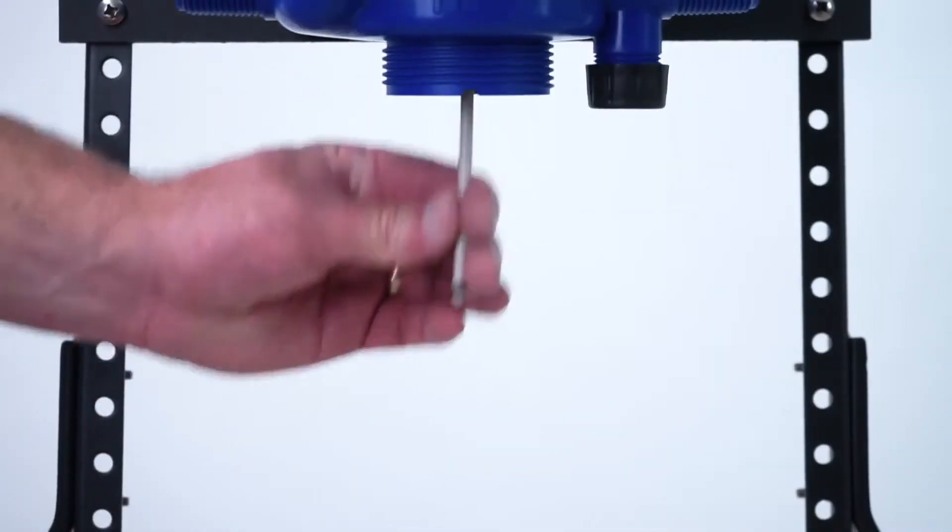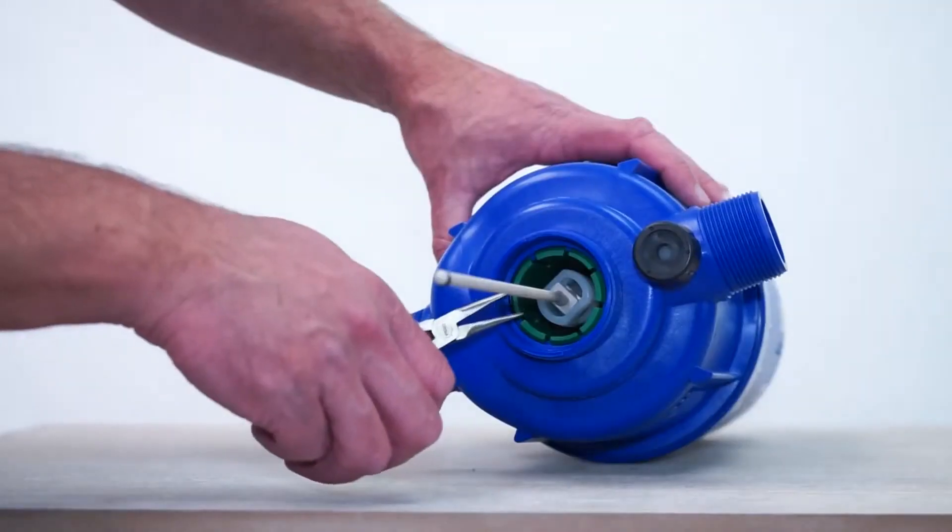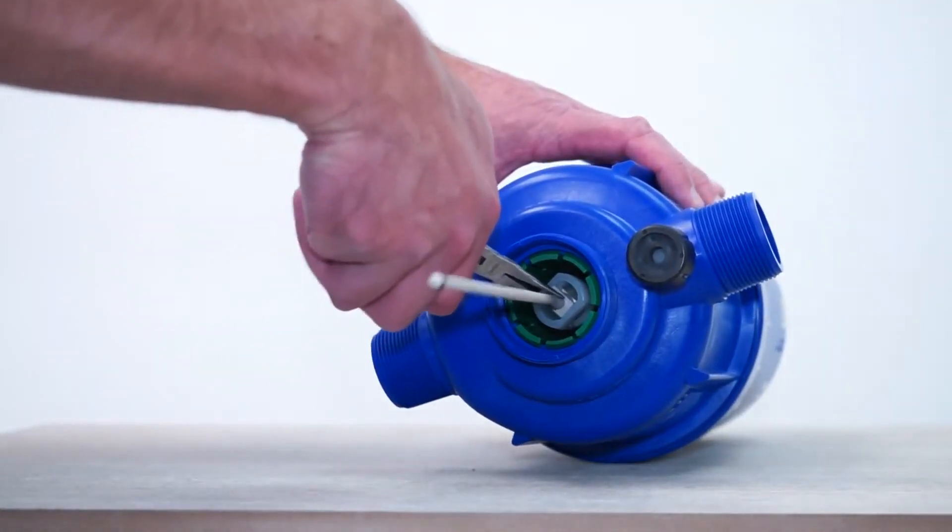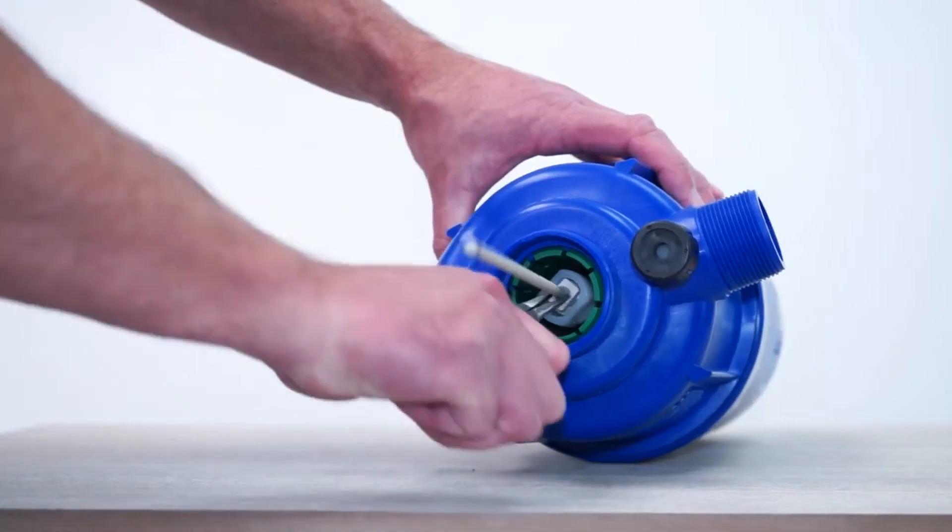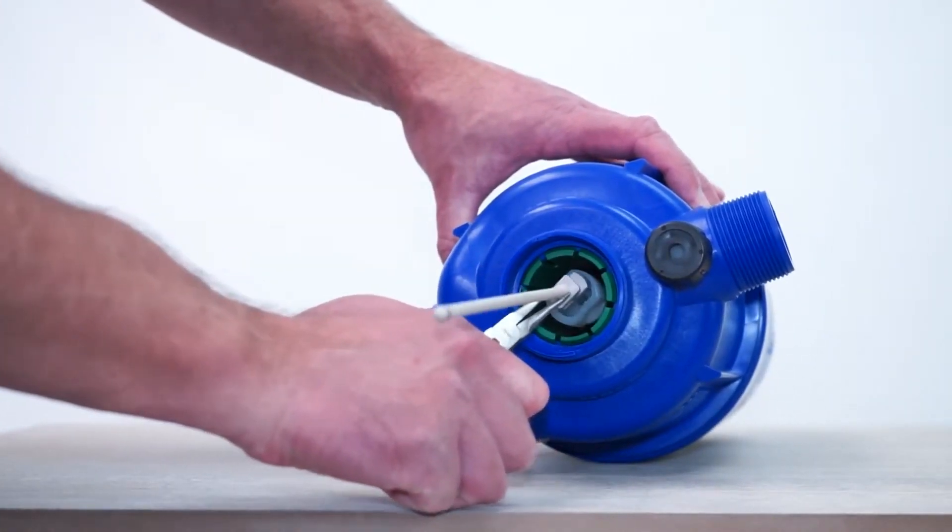To remove the beige plunger, pull it down as far as it will go. Position the needle nose pliers near the top of the plunger and carefully twist it a quarter turn counterclockwise and disconnect.